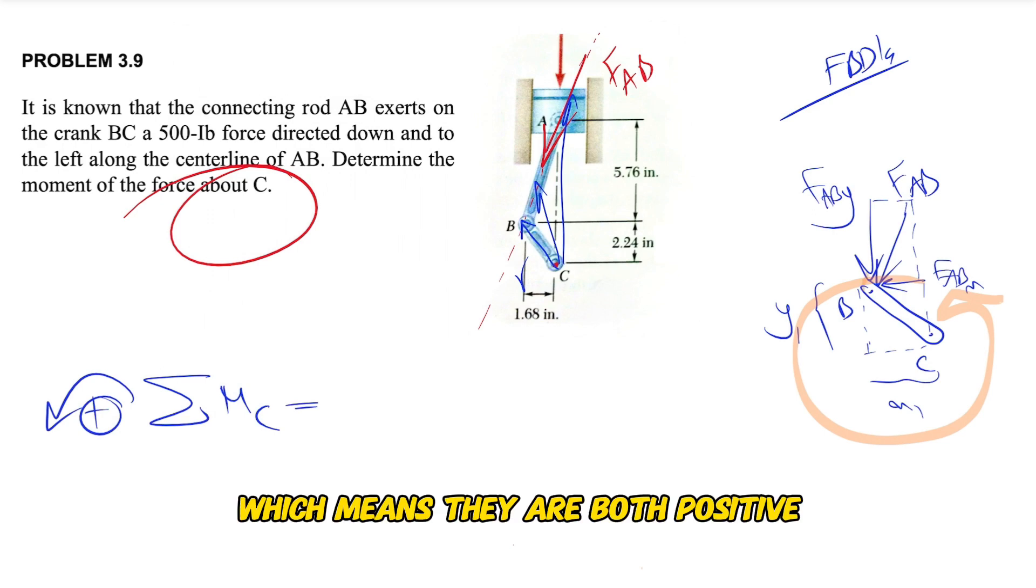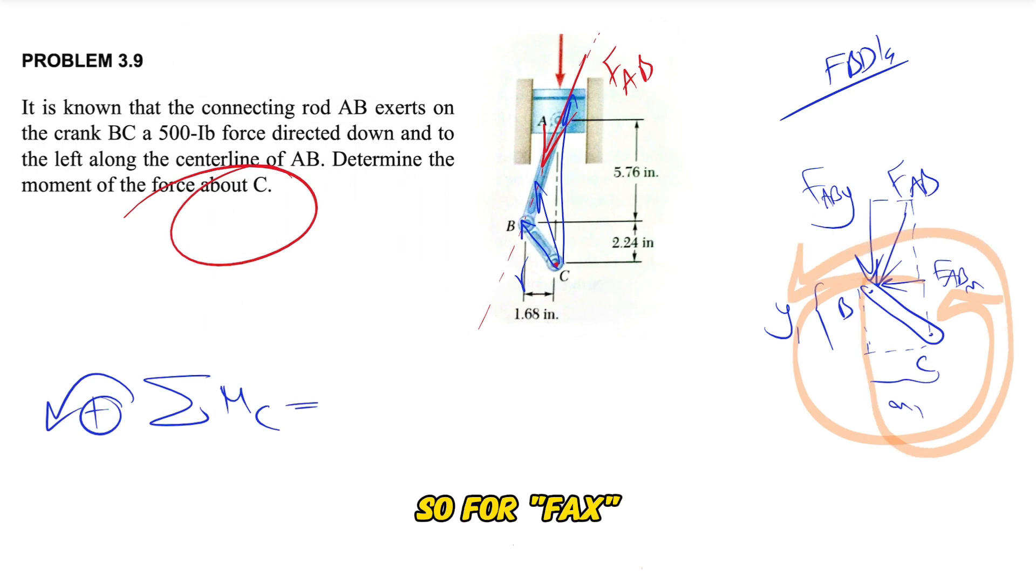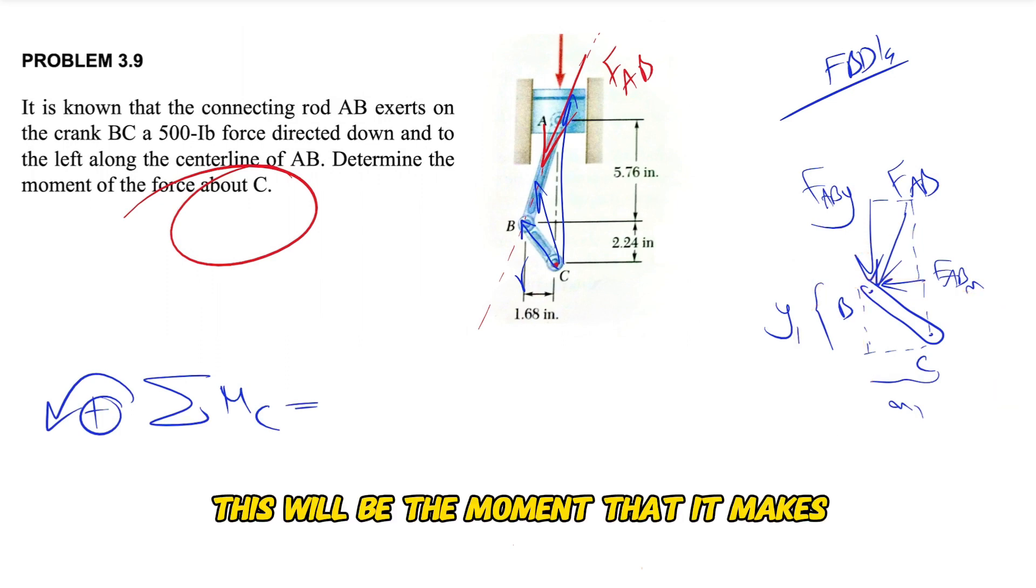I can show it in here. So for FAB x this will be the moment that it makes, and for the y component will be the same direction too.